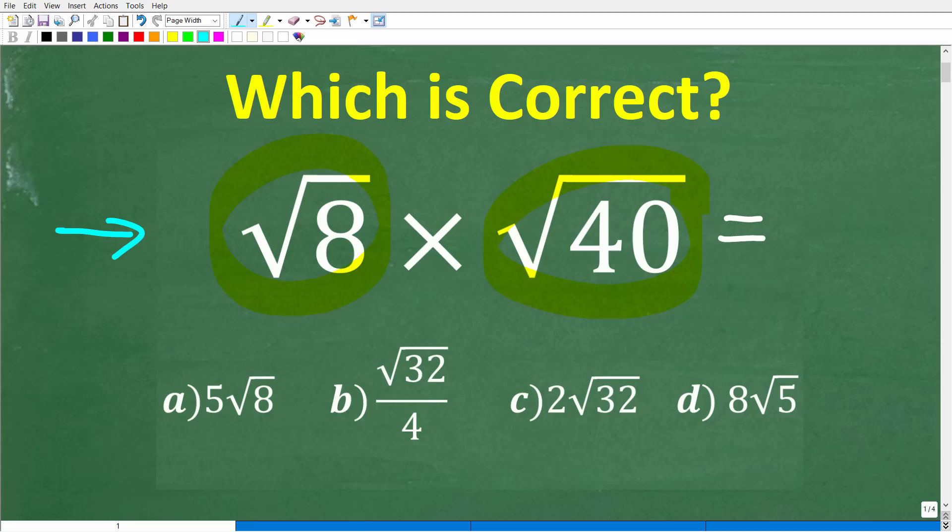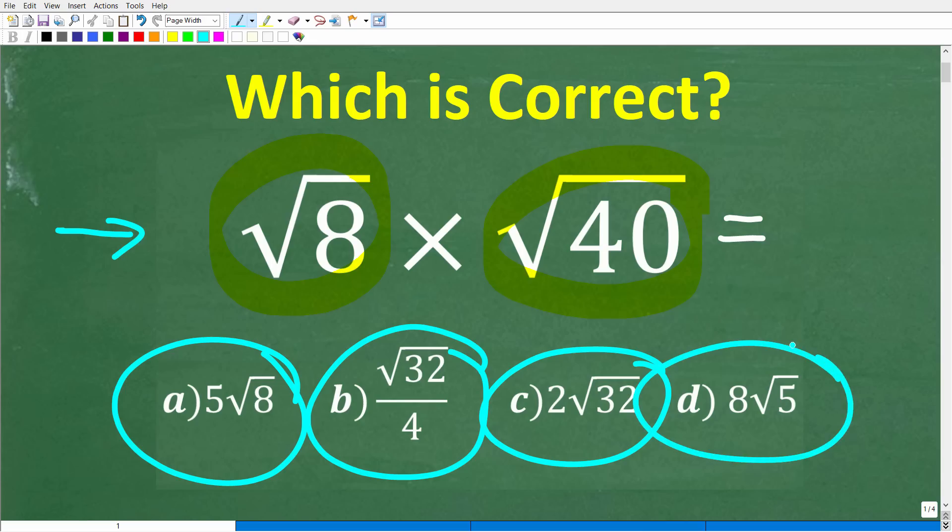We have a multiple choice question here. Let's take a look at our answers. So a is 5 times the square root of 8, b is the square root of 32 over 4, c is 2 times the square root of 32, and d is 8 times the square root of 5.